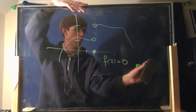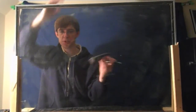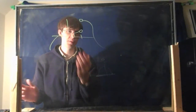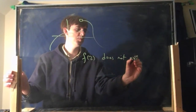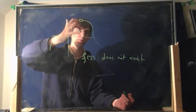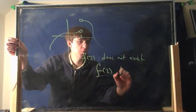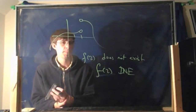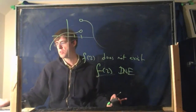Sometimes you'll see no value at all — maybe it's just all empty circles with nothing else. In this case, you would say f(2) does not exist, because there is no y-value where x is 2. There is no filled-in value anywhere. So f(2) does not exist — I'm going to write this as f(2) DNE, which stands for 'does not exist.' The empty circle and the filled-in circle — I just want to make sure everybody knows what I'm talking about.